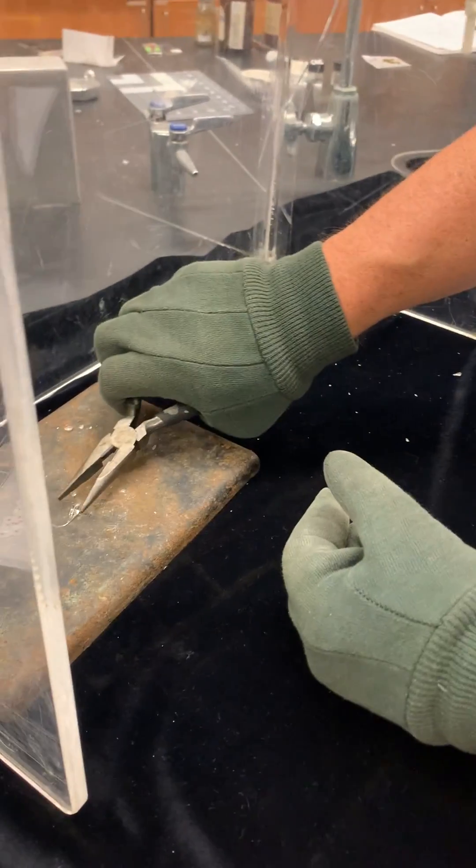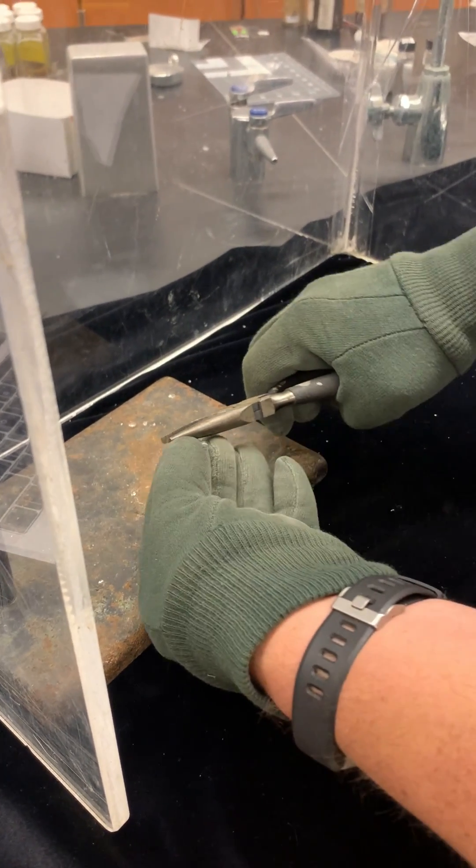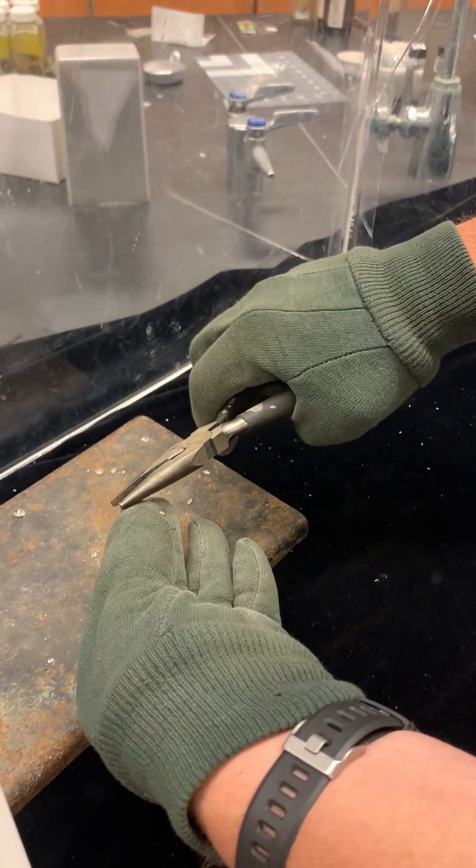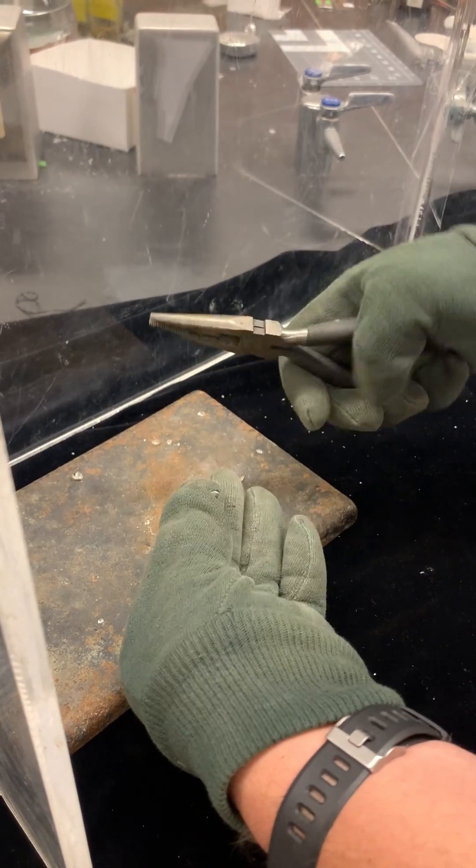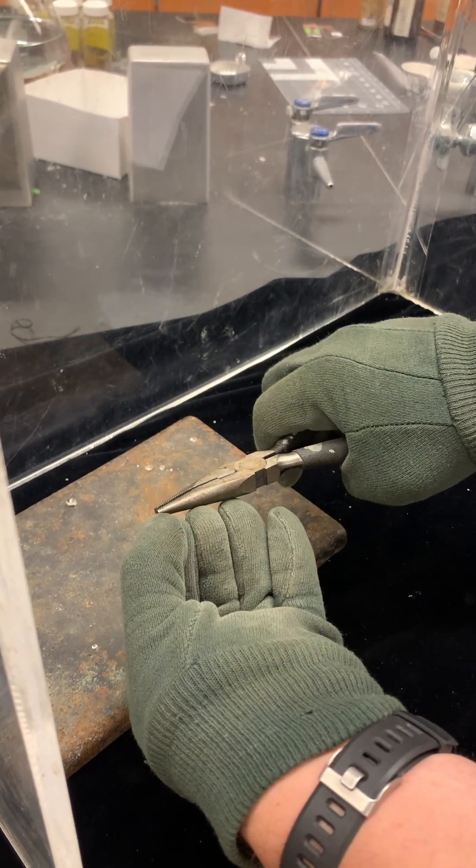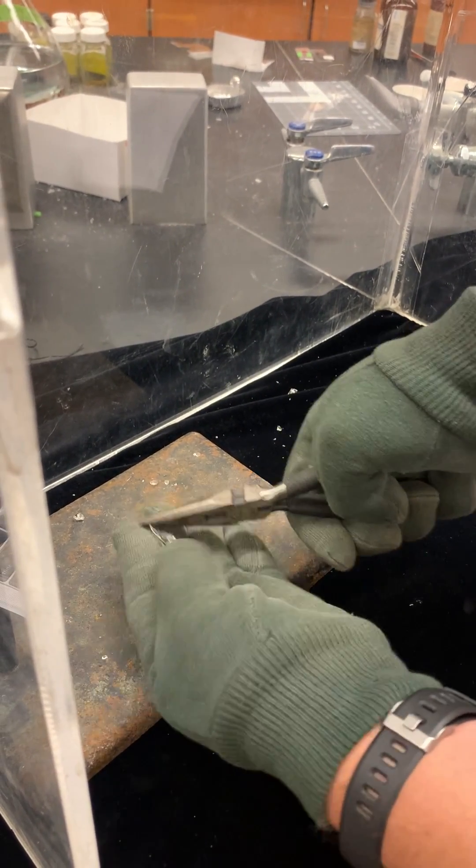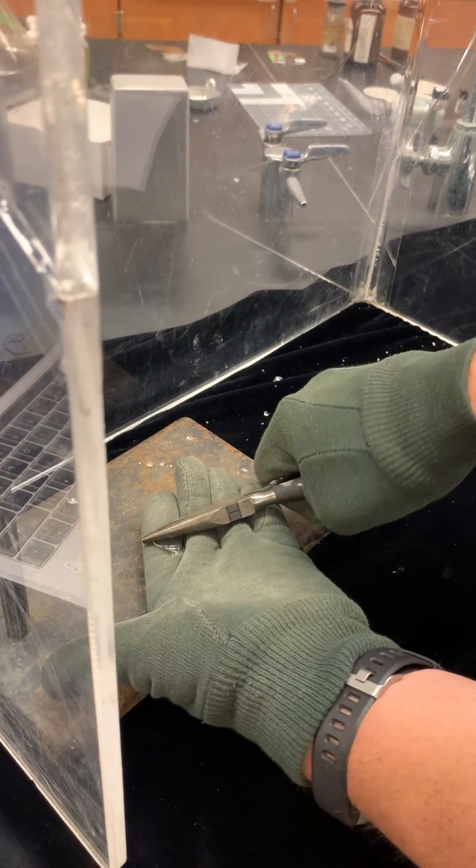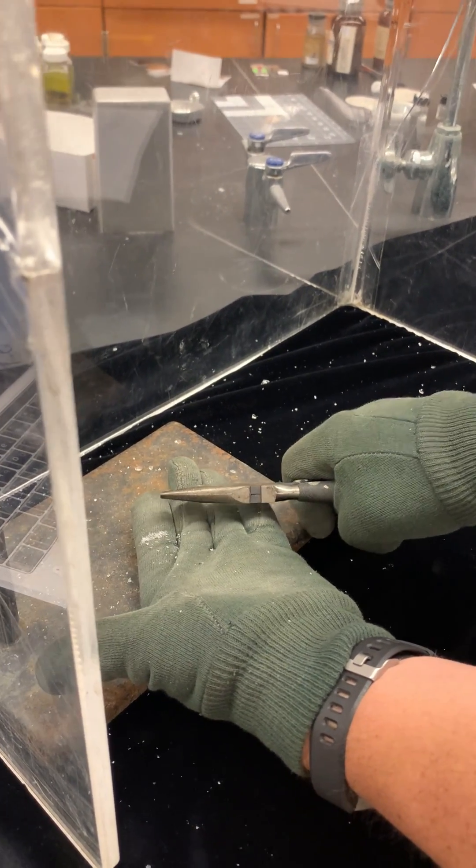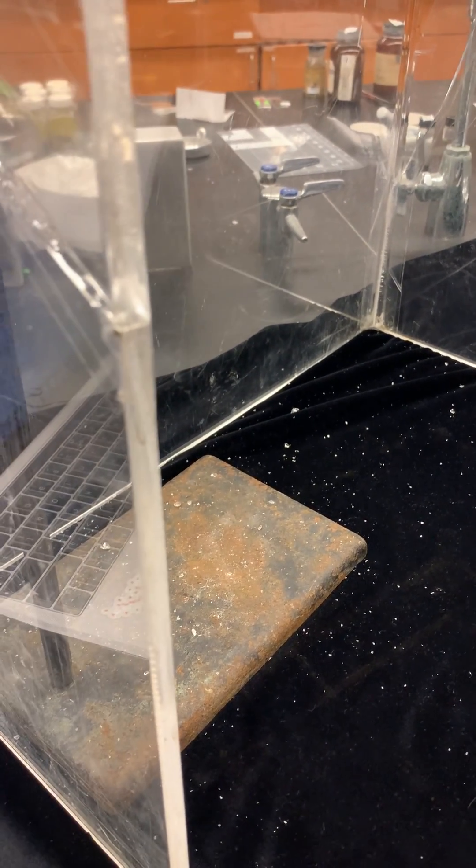But now all we have to do is put a little slit on the tail and see what happens. It immediately shatters. This is because of the great amount of tension on the interior.